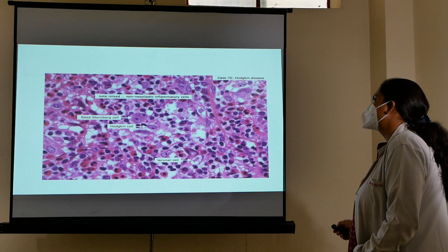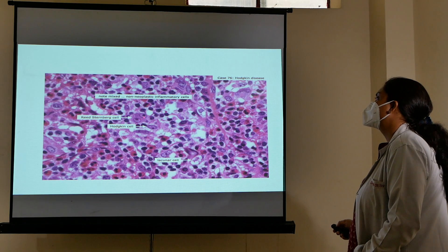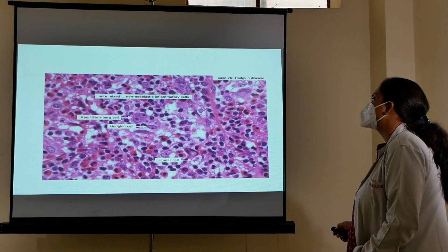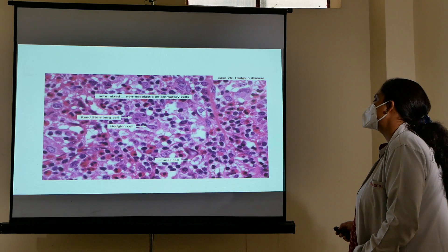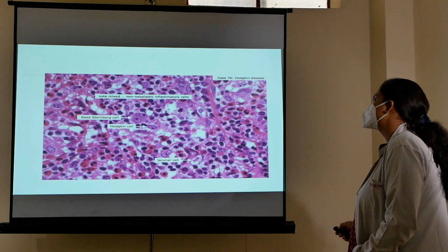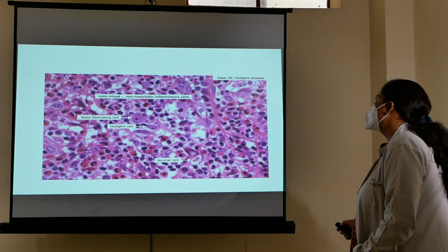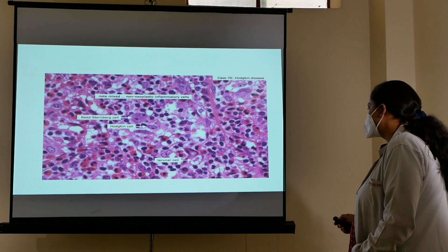Here are the typical RS cells — you can see a large cell with two nuclei and prominent nucleoli. A single large cell with a prominent nucleolus and a single mononucleus is called a Hodgkin's cell. The lacunar cell is also shown — in nodular sclerosing type, RS cells take the form of lacunar cells where the nucleus is present within a lacuna.